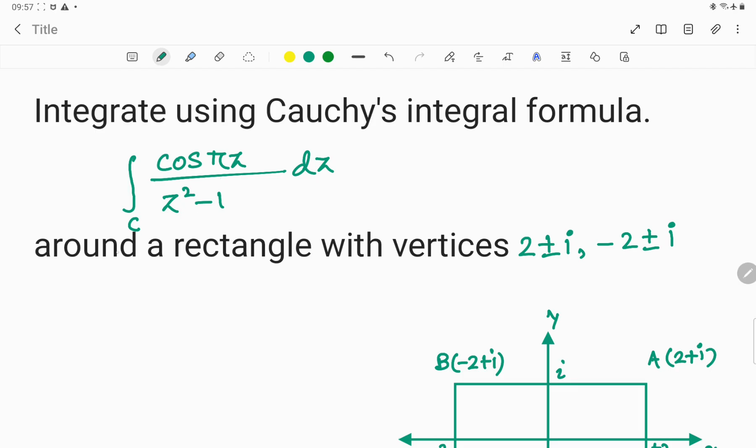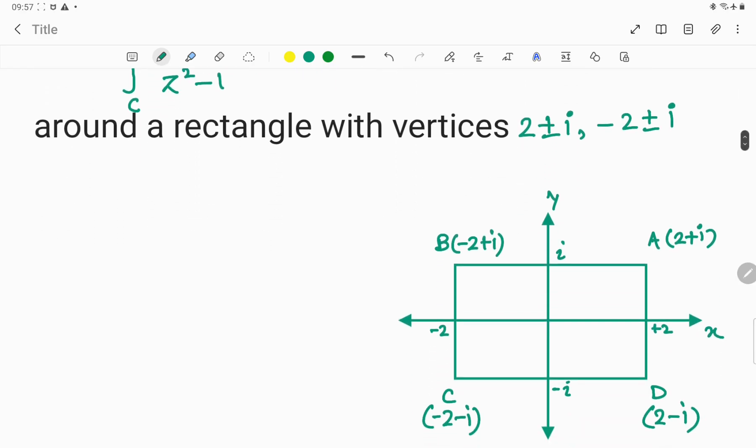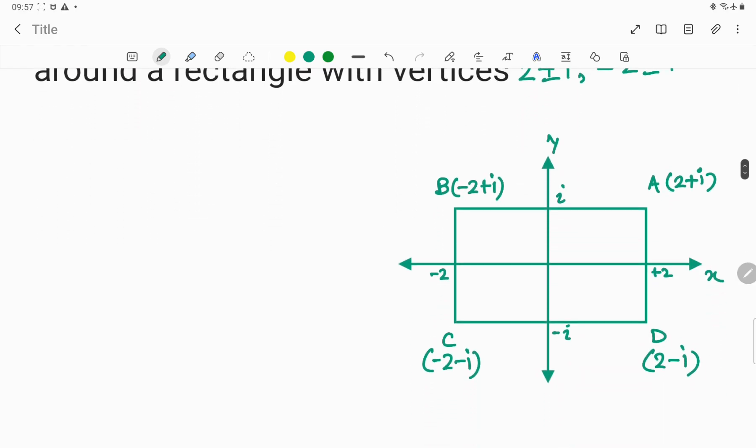C is a rectangle with vertices 2±i and -2±i. I've already drawn this rectangle ABCD. You can see vertex A has the coordinate 2+i, B has the coordinate -2+i, C has the coordinate -2-i, and D has the coordinate 2-i.